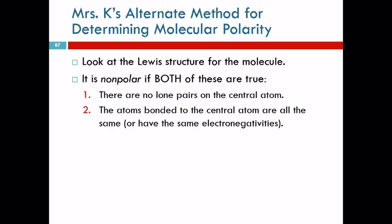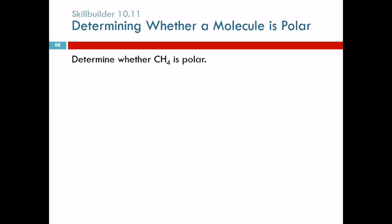My shorthand method, my alternate method. How do you tell if a molecule is polar? You look at the Lewis structure. Look at the Lewis structure. It's non-polar if both of these are true. If one is not true, then it's polar. So in a non-polar molecule there are no lone pairs, and the atoms bonded to the central atom are all the same, or they have the same electronegativities. This is much easier. Let's look at CH4. Here's the Lewis structure. Are there any lone pairs on the central atom? No. Are all the atoms bonded to the central atom the same? Yes. So it's non-polar. No lone pairs. All atoms the same. Non-polar.